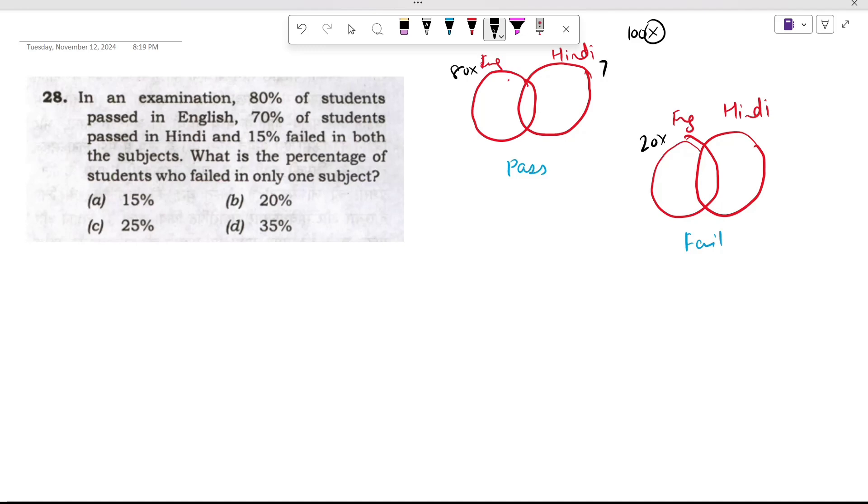70% of the students passed in Hindi. That means 70X would have passed, and 30X would have failed. Now, 15% failed in both subjects. That means this value is 15X. So this would come out to be 5X because the total circle is 20X. And this would come out to 15X because the total circle is 30X.